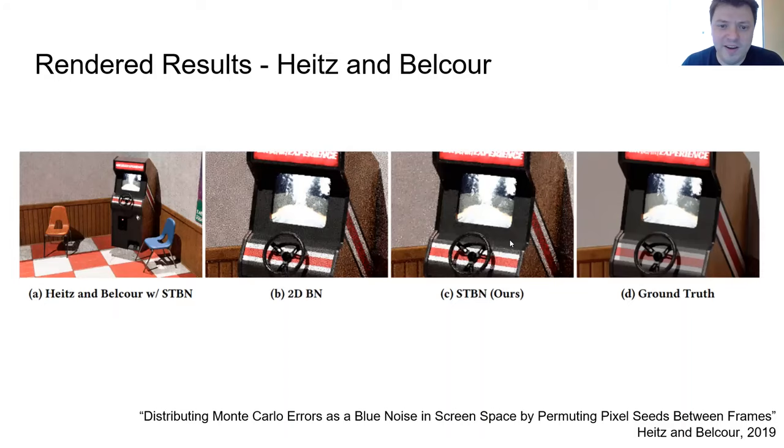where they move pixel seeds around every frame to make a render that is a blue noise distributed error render. So their usage case was only for spatial filtering. So they'd render a frame spatially filter it and then move on so it wasn't temporally accumulated.